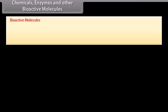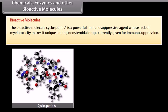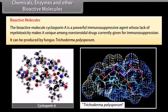Bioactive molecules. The bioactive molecule cyclosporine A is a powerful immunosuppressive agent whose lack of myelotoxicity makes it unique among non-steroidal drugs currently given for immunosuppression. It can be produced by the fungus Trichoderma polyspermum.